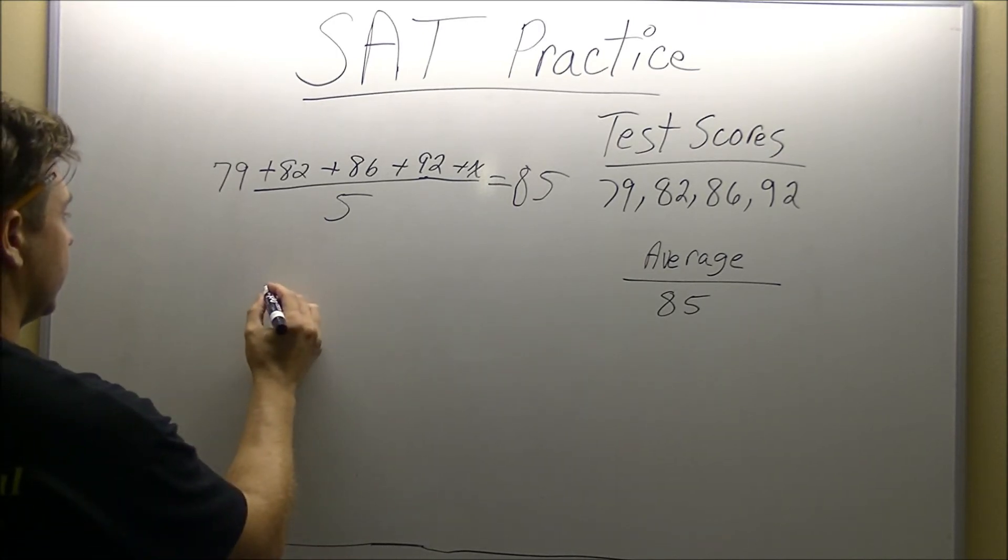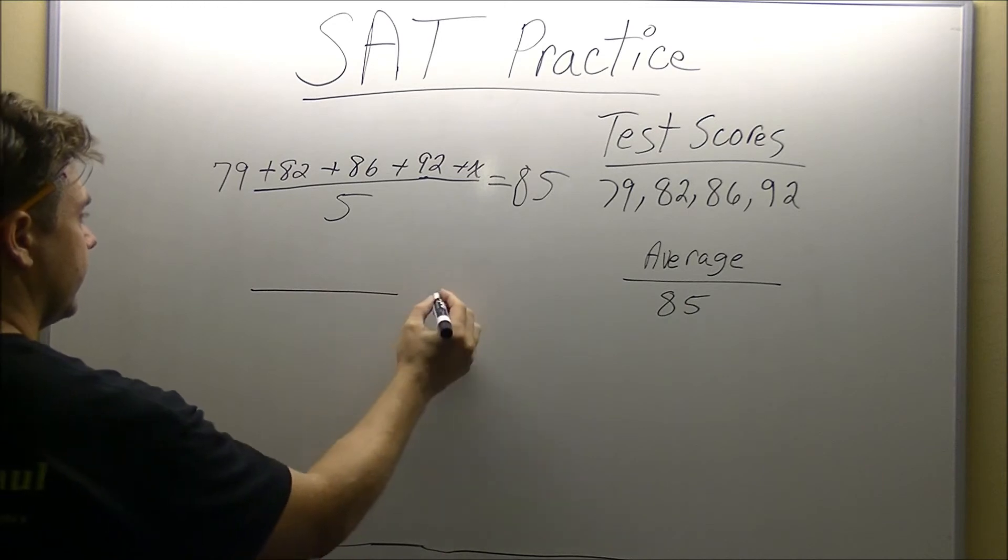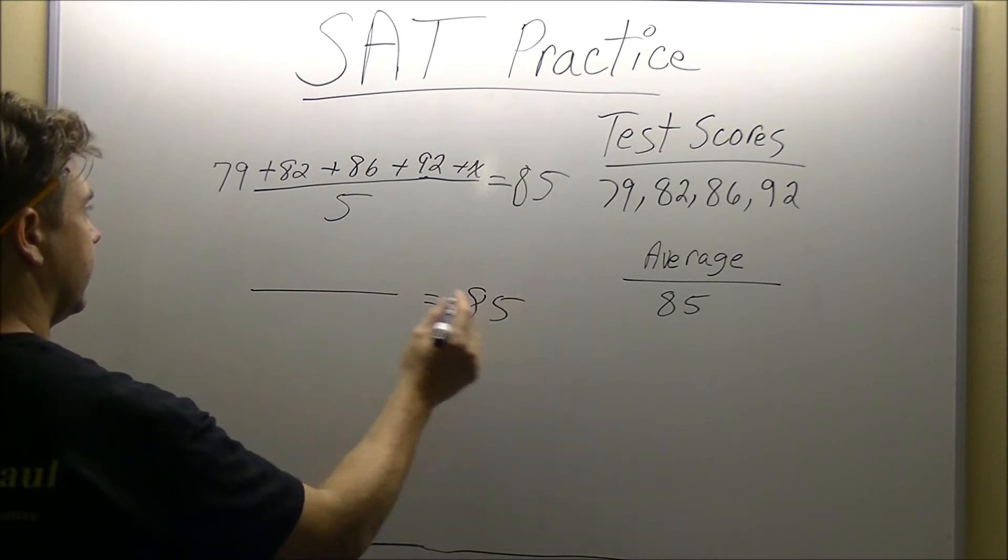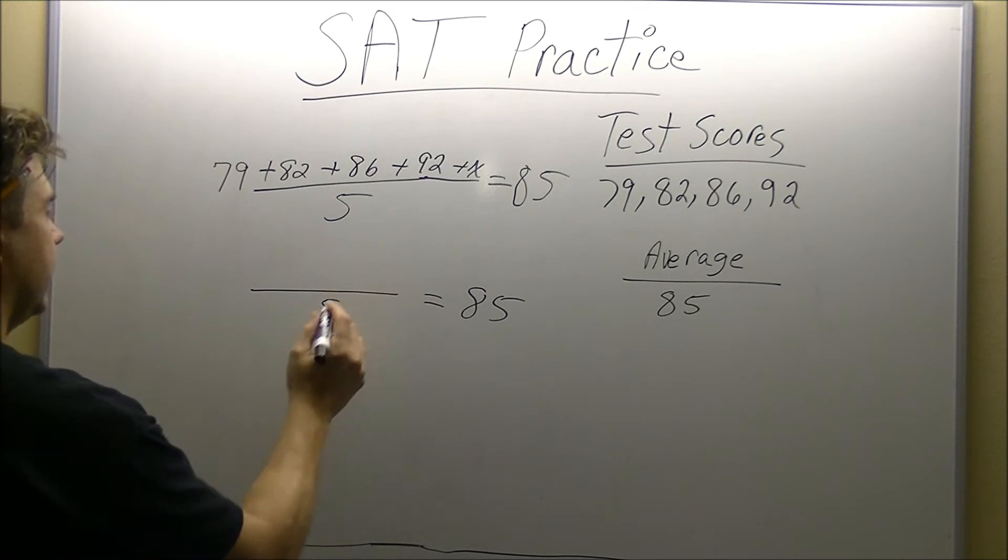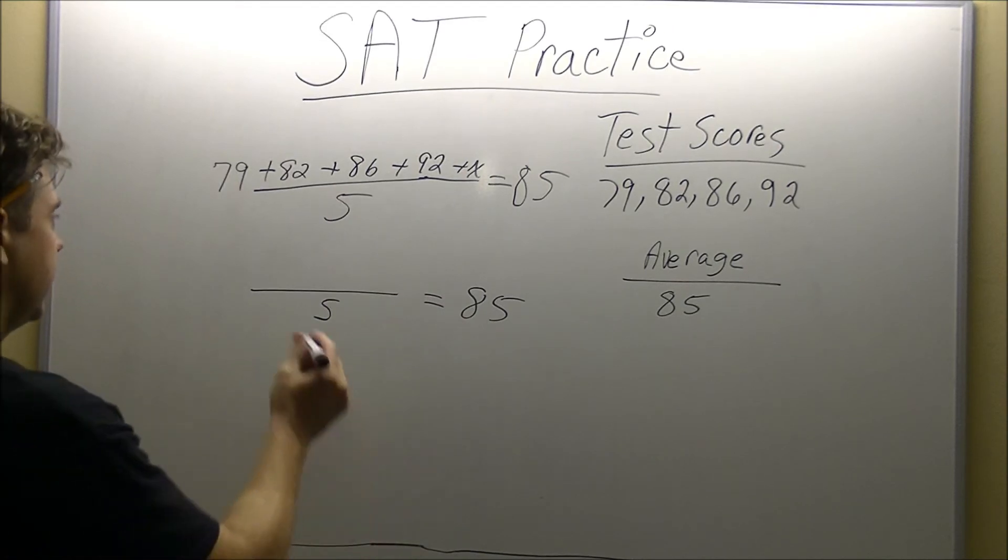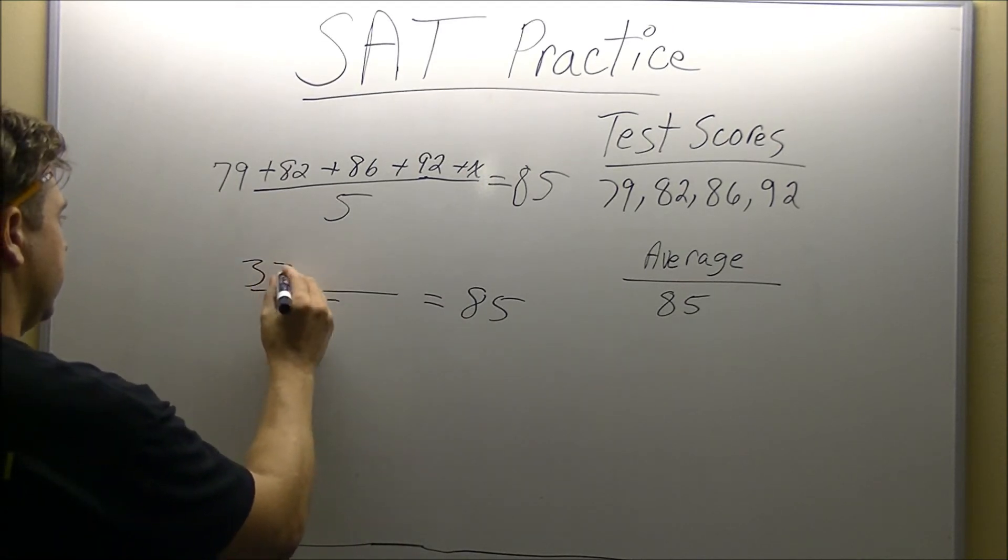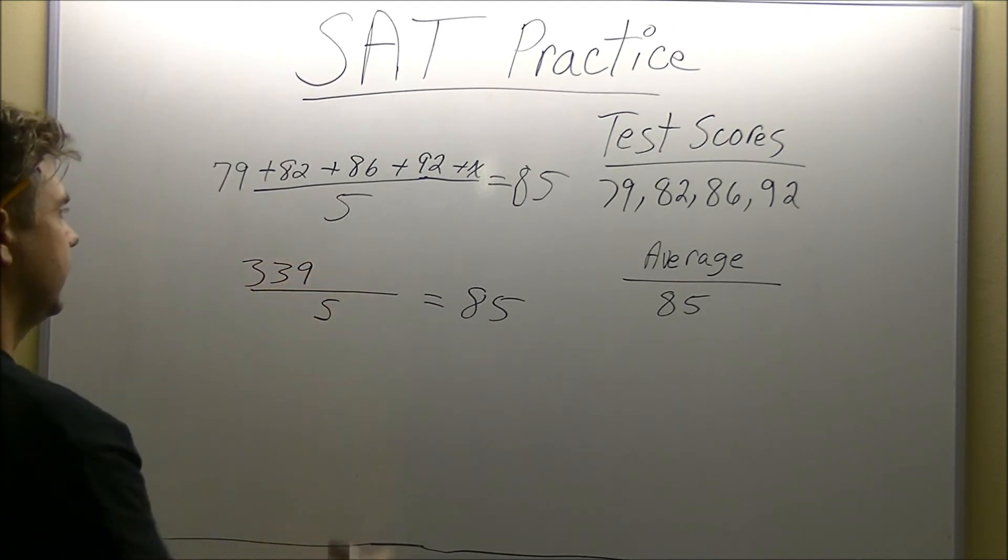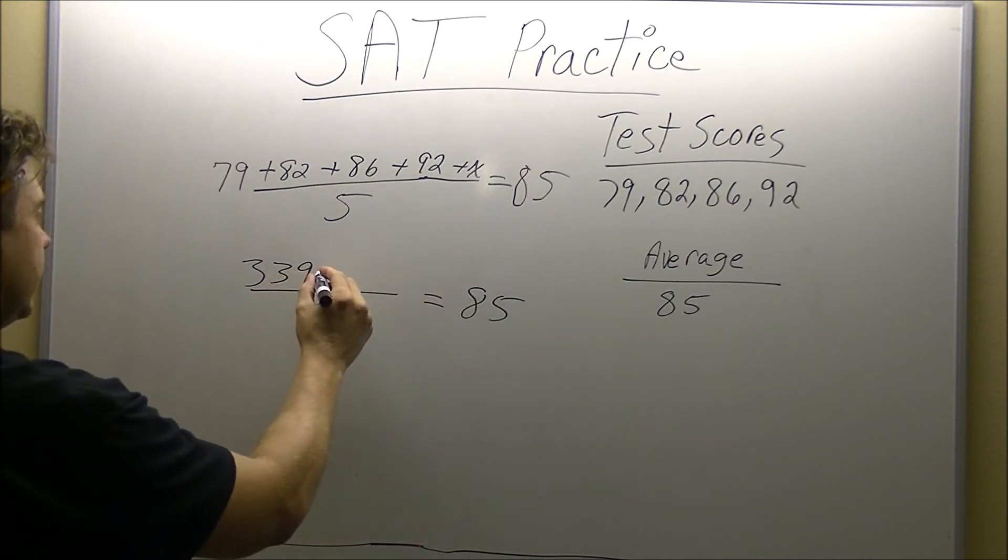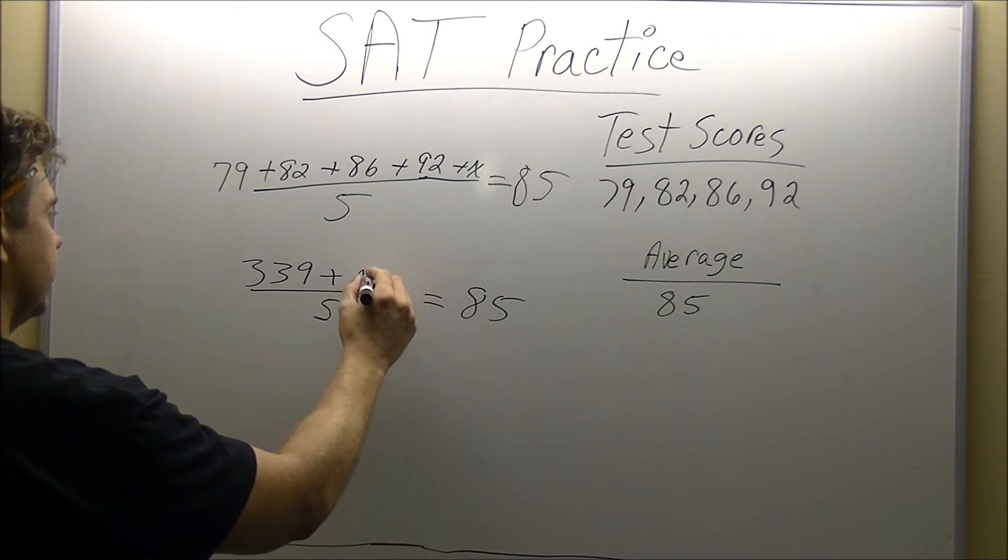Step two, we're going to drop what we know, which is the 85. We're going to drop the five. Our next step, we're going to add the four test scores. That's going to give us 339. Nothing we can do with this X. We can't add X to 339. So we're just going to drop our X.